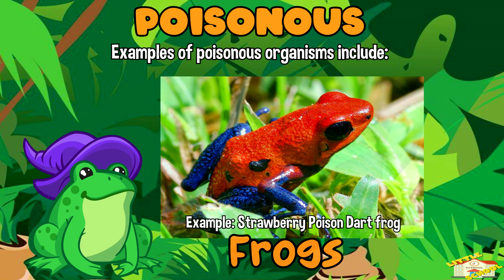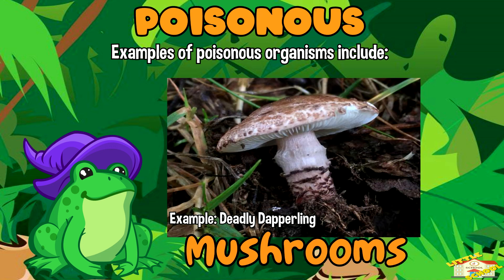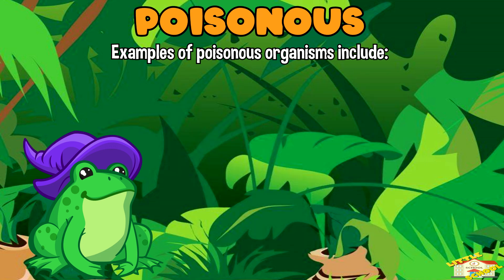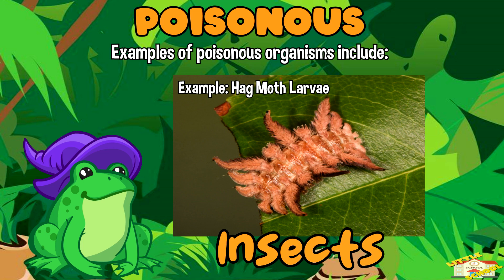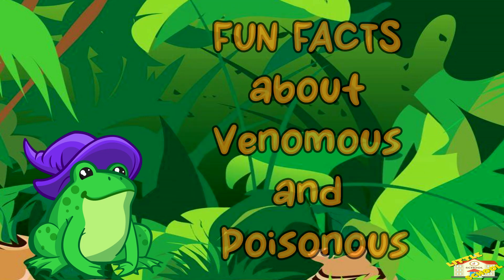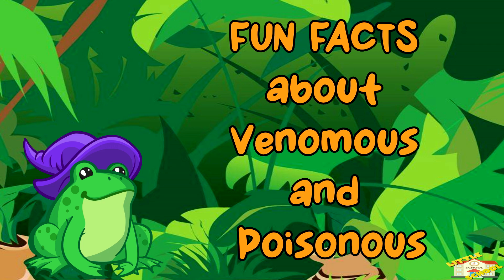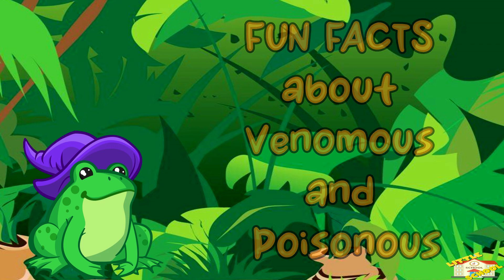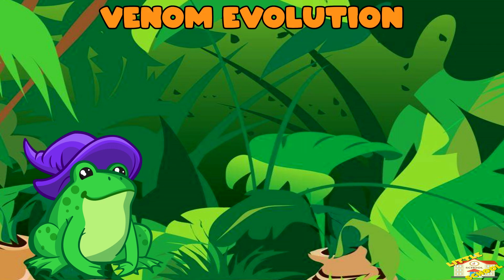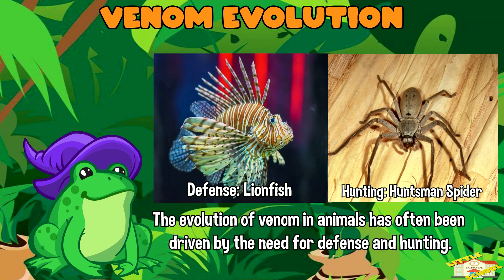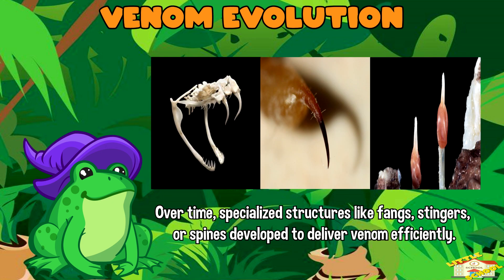Now here are some fun facts about venomous and poisonous organisms. Venom evolution: the evolution of venom in animals has often been driven by the need for defense and hunting. Over time, specialized structures like fangs, stingers, or spines developed to deliver venom efficiently.